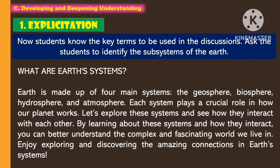For the explicitation, the students know the key terms to be used in the discussion and are asked to identify the subsystems of the earth. What are the earth's systems? The earth is made up of four main systems: the geosphere, biosphere, hydrosphere, and atmosphere. Each system plays a crucial role in how our planet works. By learning about the systems and how they interact, you can better understand the complex and fascinating world we live in. Enjoy exploring and discovering the amazing connections in earth's systems.